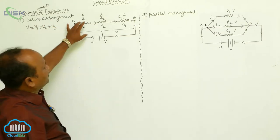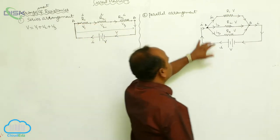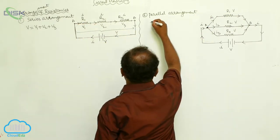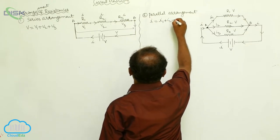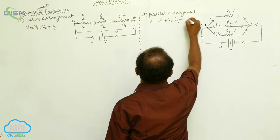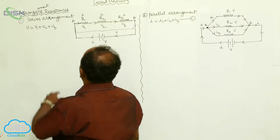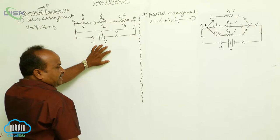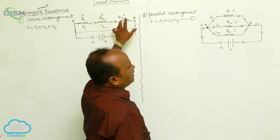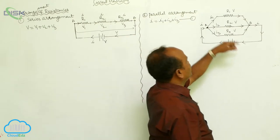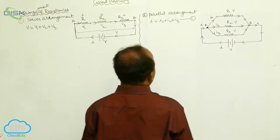Potential is distributed in the series arrangement, and current is distributed in the parallel arrangement. I is equal to I1 plus I2 plus I3. This is the first equation. In the series arrangement, potential is distributed among the resistances; in the parallel arrangement, current is distributed through the three individual resistances.